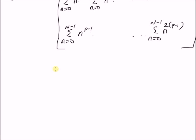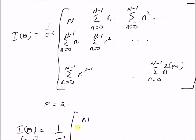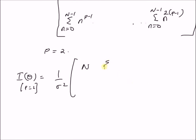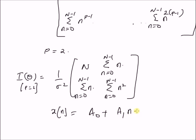Now we can easily verify the result for the line fitting problem, that is when p = 2. The Fisher information matrix becomes (1/σ²) times a 2×2 matrix with first element N, the element in the first row and second column is Σ_{n=0}^{N-1} n, the element in the second row and first column is also Σ_{n=0}^{N-1} n, and the element in the second row and second column is Σ_{n=0}^{N-1} n². This is the Fisher information matrix for the line fitting problem where x(n) = a_0 + a_1*n + w(n).